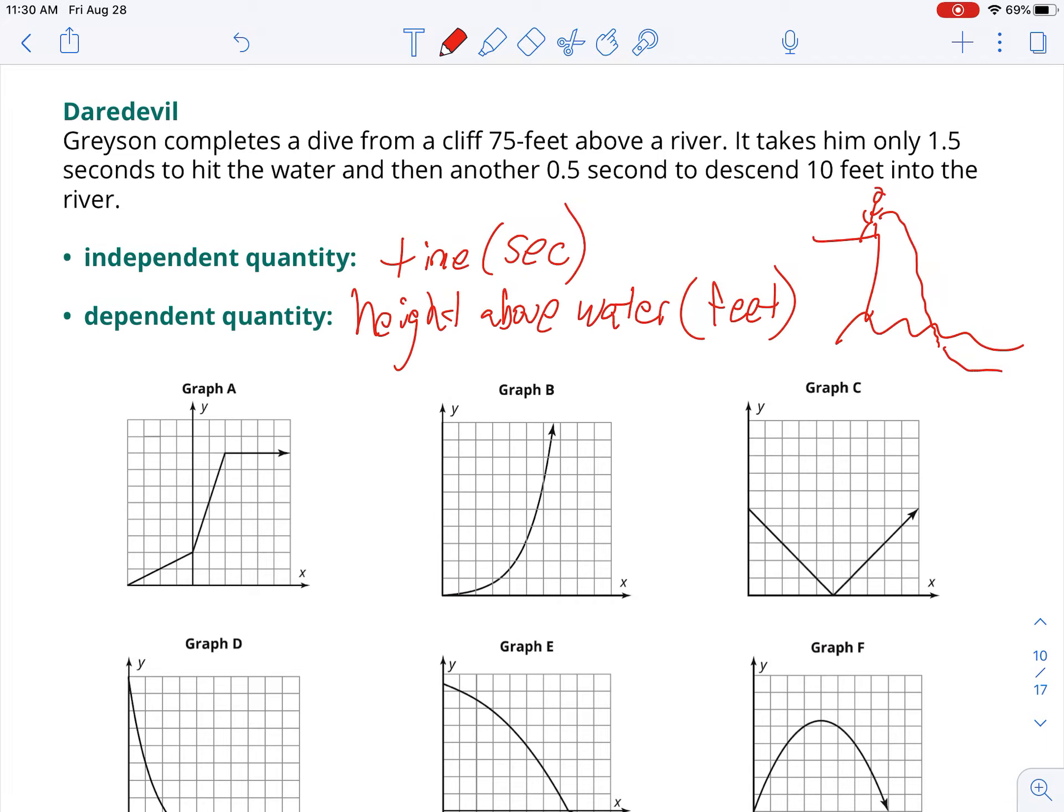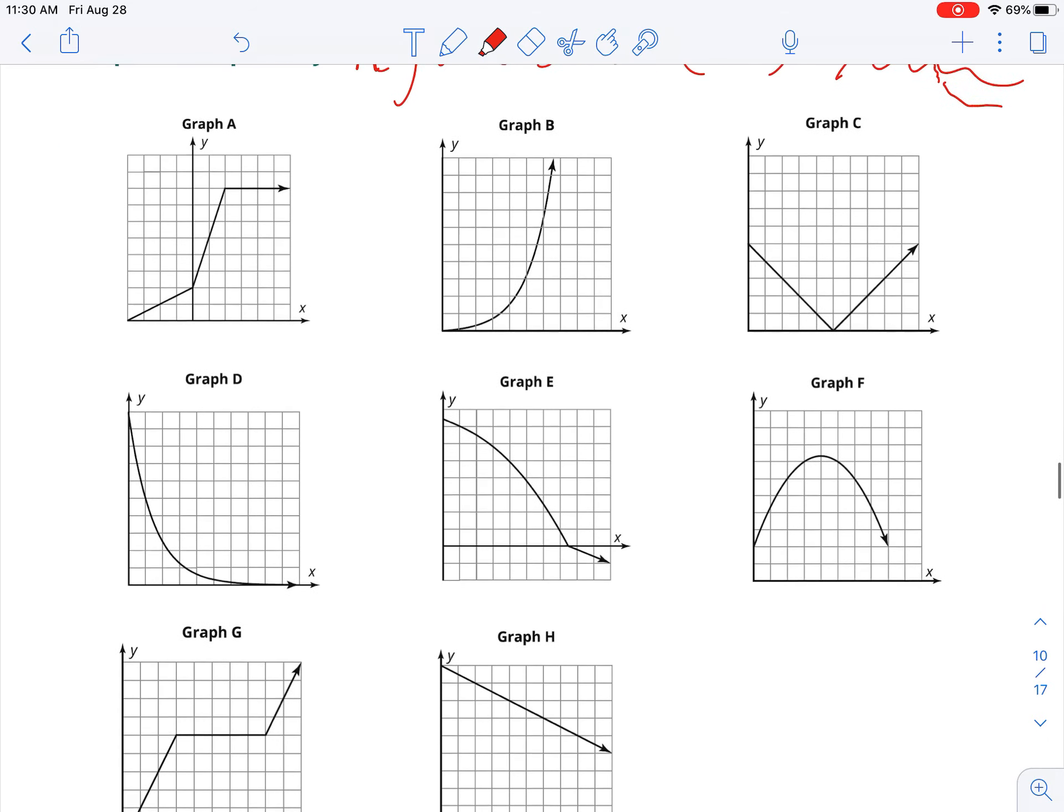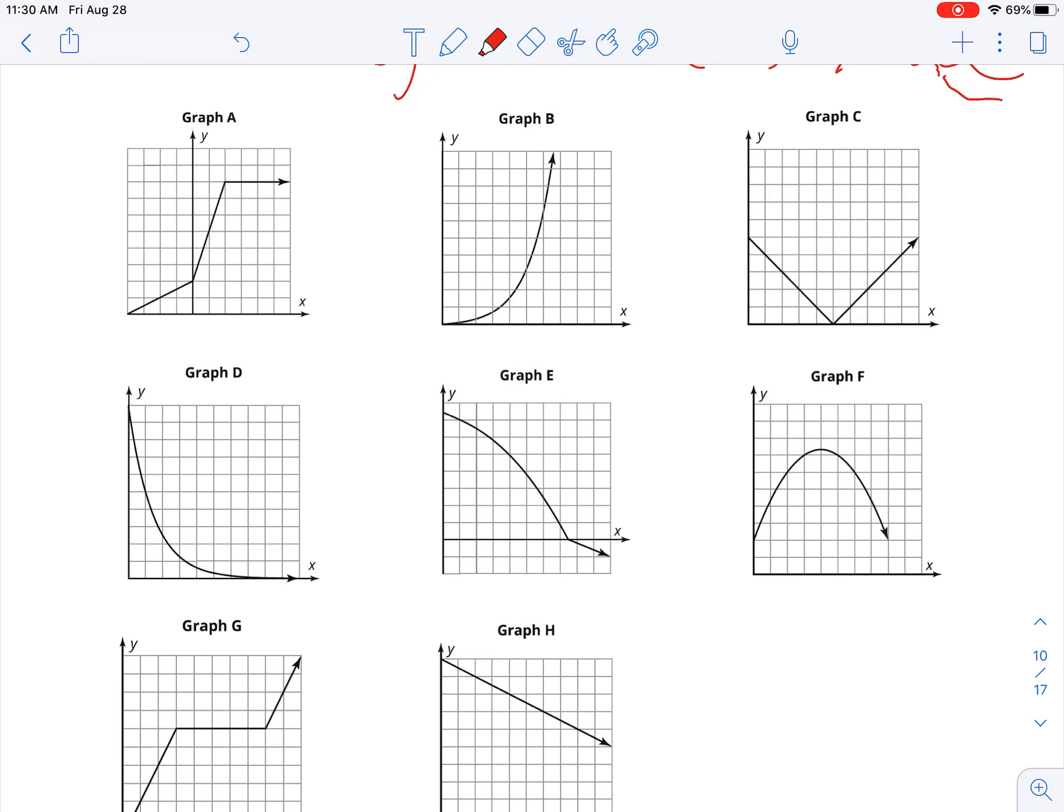So we want to try to find a graph that's going to match that. As he's diving down, I'm thinking of a graph that is decreasing. So let's look at your eight graphs. And I'm going to read this from left to right. As I read these graphs from left to right, what are your eyes doing? Are they going up? Are they going down? Graph A, this is going up. So it's not going to be graph A. Graph B, your eyes are going up. So it's increasing. We don't want that.